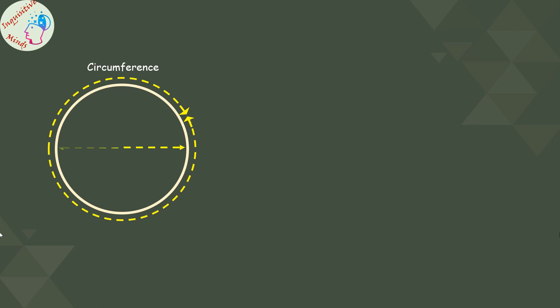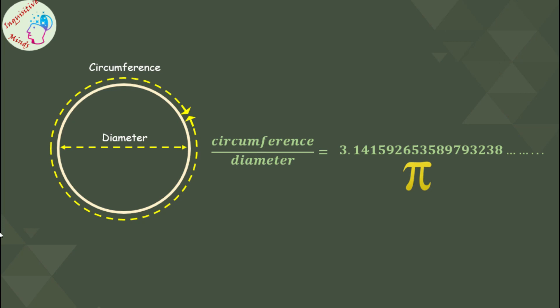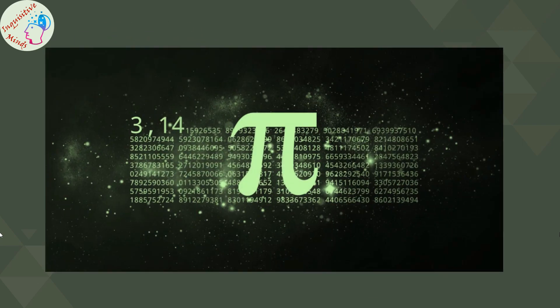The ratio of these two will be a constant number: 3.1415926 and so on. This constant number is known as pi. The decimal expansion of this number neither terminates nor repeats.